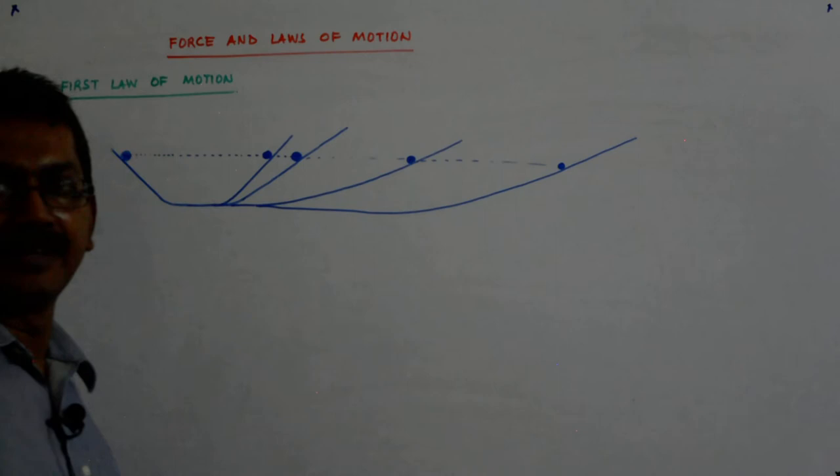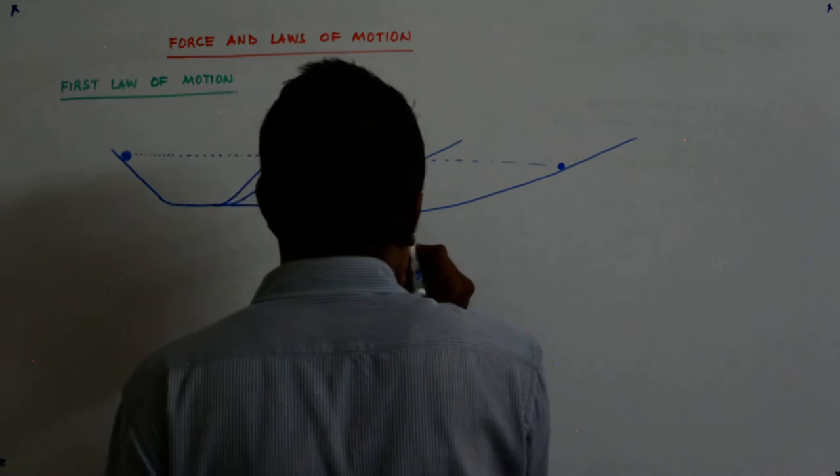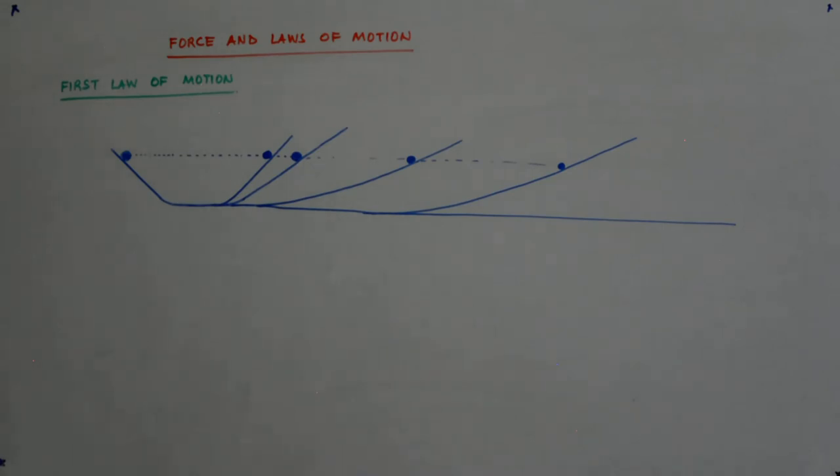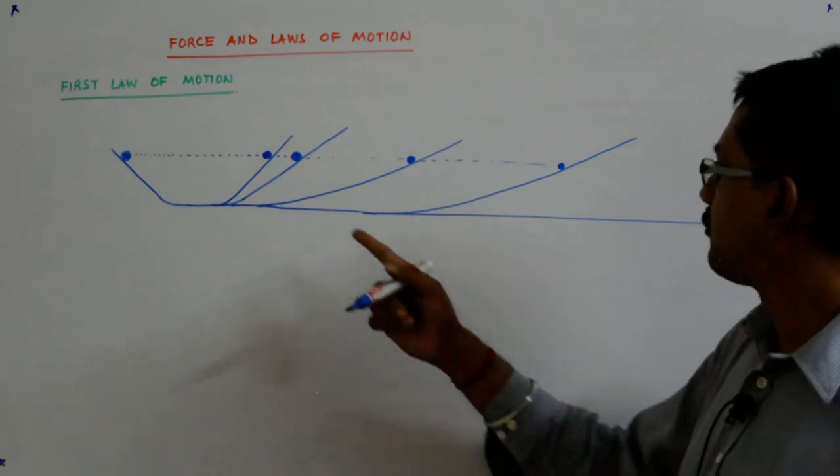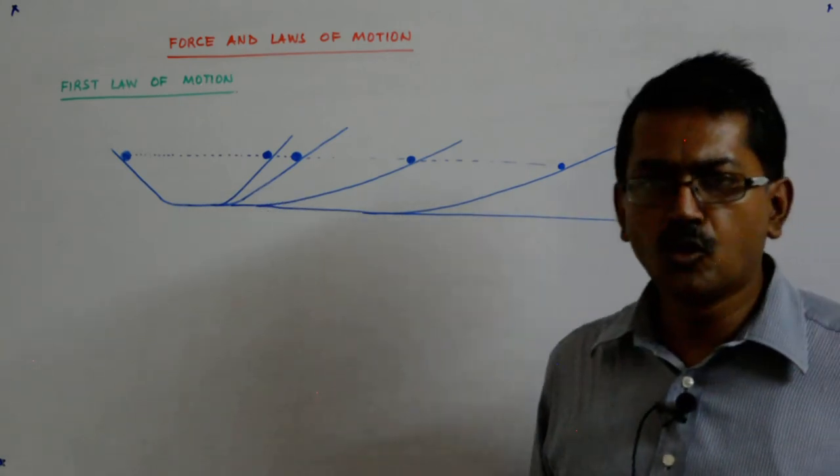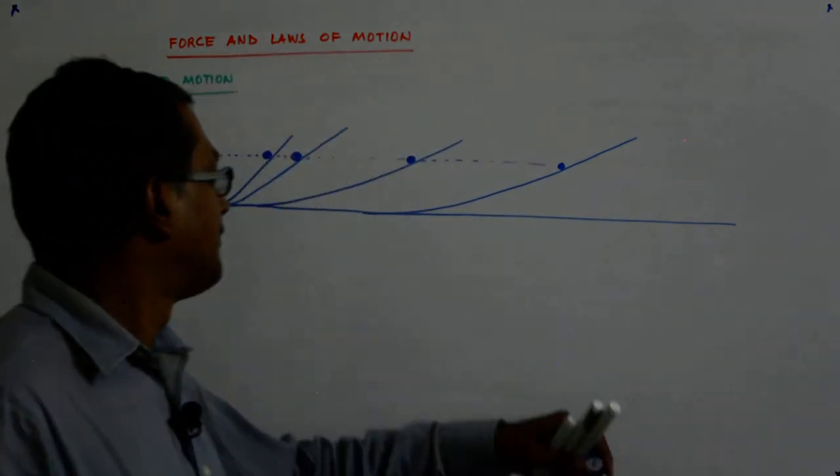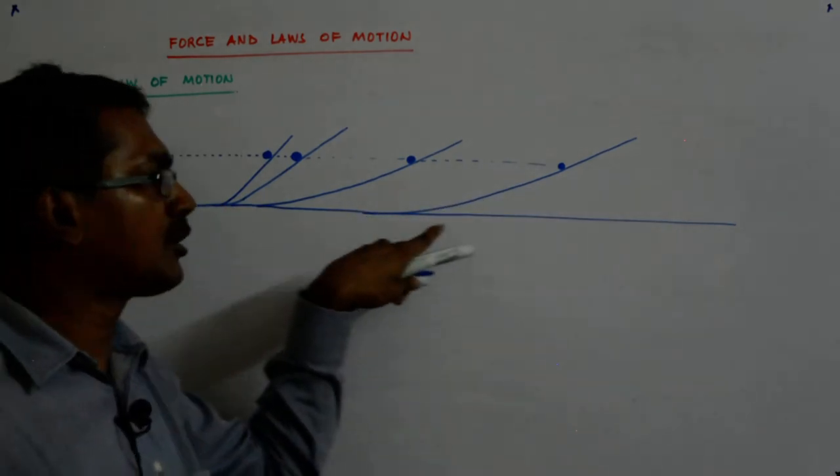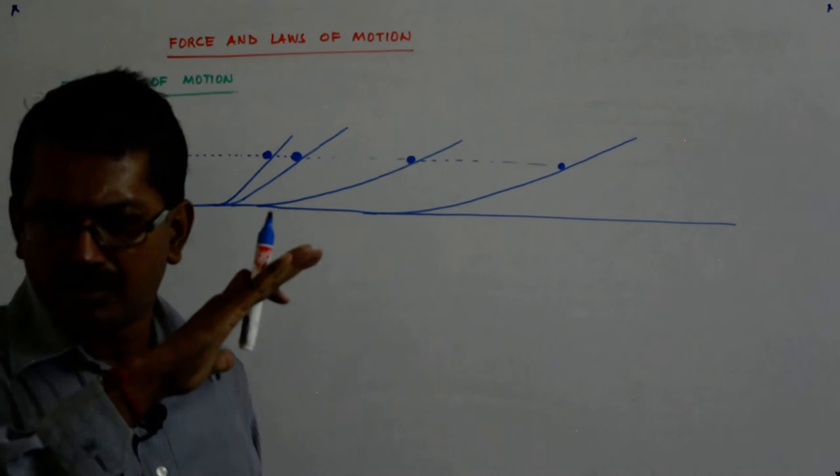Now what he did will astonish you. What he did? He made this flat. He made this straight. And he deduced something that is absolutely brilliant. He said that if it wants to keep on moving till it attains this height, then when this is horizontal, the ball should keep on moving and moving and moving till infinity. Why? Because it will never come up.